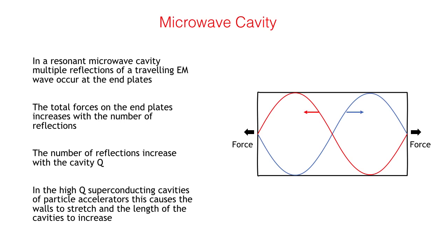M Drive is essentially a microwave cavity where multiple reflections of the traveling electromagnetic wave occur at each end plate. These reflections cause forces at each end, and the forces will increase with the number of reflections that take place.